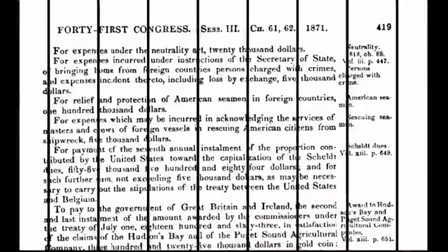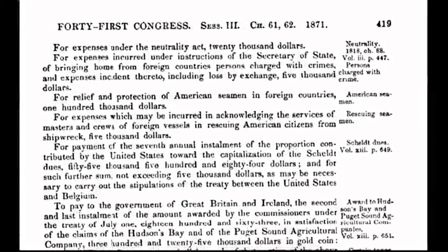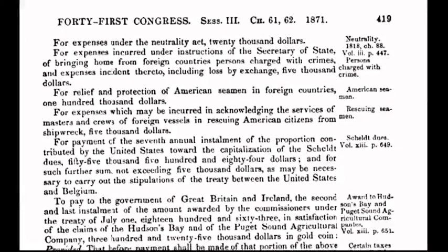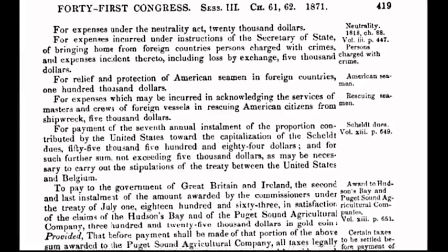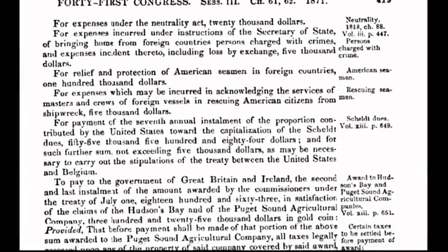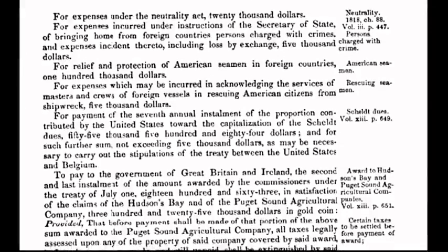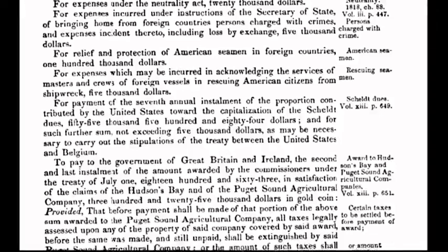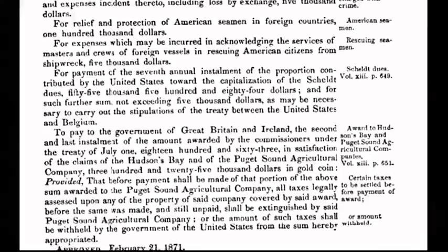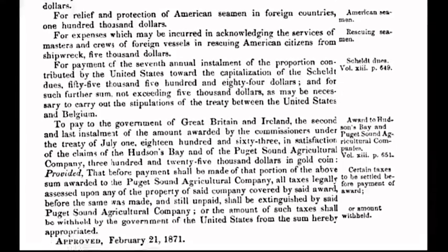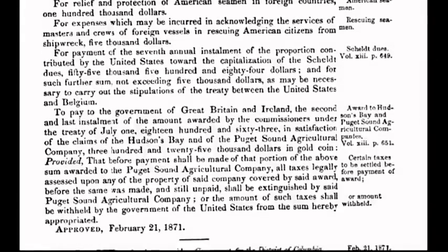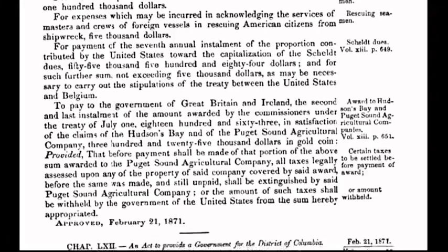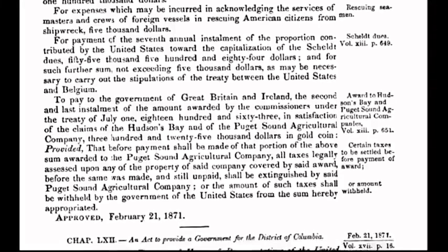In today's program, I will put the spotlight on an act that was enacted on February 21st, 1871. Congress passed an act to provide a government for the District of Columbia, also known as the Act of 1871. When you fully understand the ramifications of the past, you will then fully understand the ramifications of the present, and you will know how to change the future. And here is where our story begins.